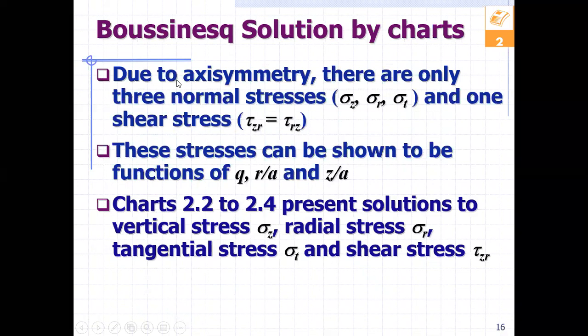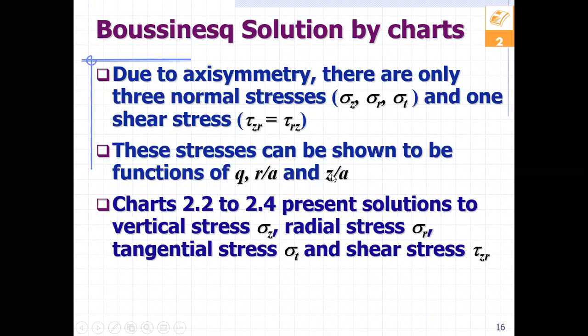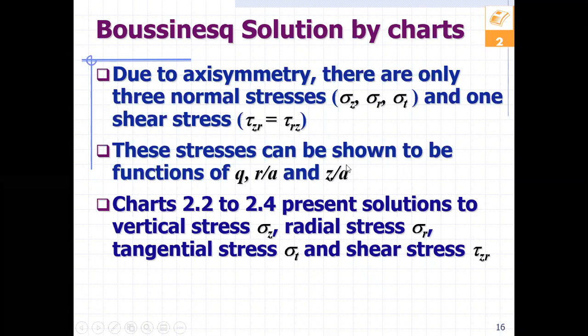Because of axisymmetry, there are only three normal stresses — sigma_z, sigma_r, and sigma_t — and only one shear stress. These stresses can be shown to be functions of the uniform load q, the distance from the axis of symmetry r divided by the radius of load application a, and the depth z divided by the radius a.